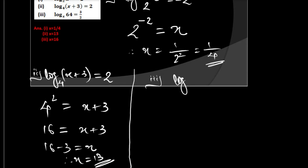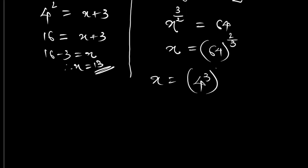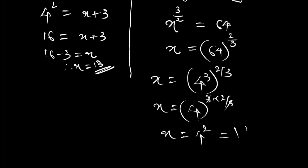Question 3: log of 64 to the base x is equal to 3/2. Converting: x raised to 3/2 equals 64. Shifting the power to the other side gives x equals 64 raised to 2/3. Since 64 is 4 cubed, x equals 4 raised to (3 × 2/3), so x equals 4 squared, which is 16.